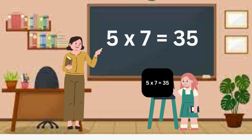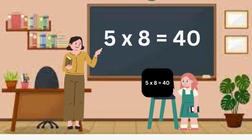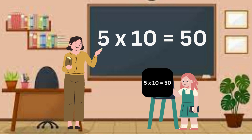Five sevens are thirty-five. Five eights are forty. Five nines are forty-five. Five tens are fifty.